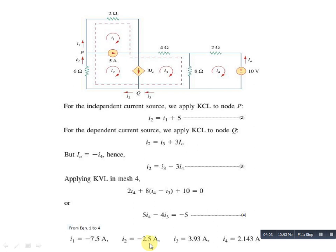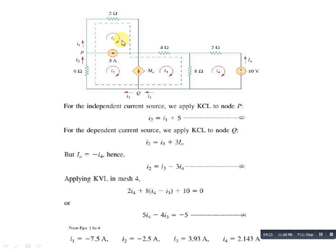The question asked to find I1 and I4, which we have easily found: I1 = −7.5 A and I4 = 2.143 A. This is the basic concept for finding currents using super mesh condition. Remember that when two super meshes are present, the outer part of the intersecting region forms the large super mesh. Thank you for watching — please subscribe and share this video.